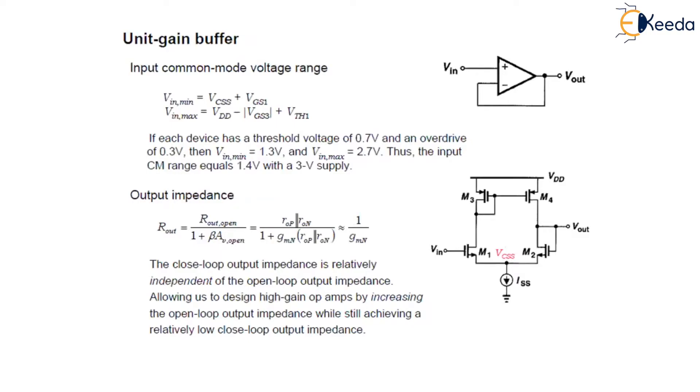Now let us take an example and calculate the input common mode voltage and the closed loop output of the unity gain buffer which is depicted here in this figure. You can see this is the unity gain buffer where we try to determine the common mode voltage.